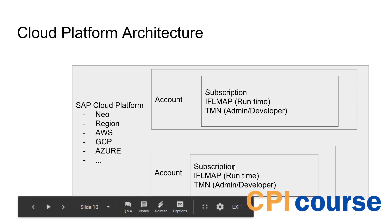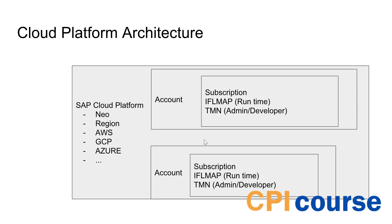If you have multiple different scenarios you would also be able to see that you have different accounts - one for each of the different tenants. In many cases you would have many CPI tenants in the cloud because of the way licensing has been delivered. That means you would have to figure out which of them makes the most sense for where you can do your development, and it's not always easy to understand what makes sense.